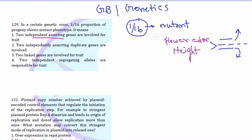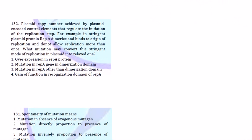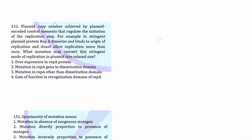Now, what causes one in 16 offspring to be mutant? You need a slight knowledge of independent assortment, which is why this term is important — I call these term-memorizing or TM-category questions. If two genes are simply independent assorting, there shouldn't be any mutant. Mutation in a 1-in-16 ratio can arise only if those two genes are duplicate genes of each other. That is the only reason for this high rate of mutation. So option two — two independently assorting duplicate genes — is the correct answer.